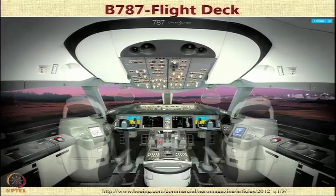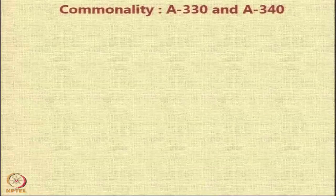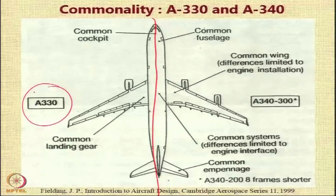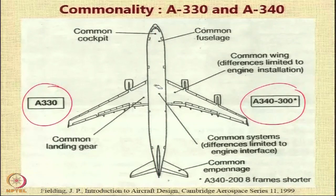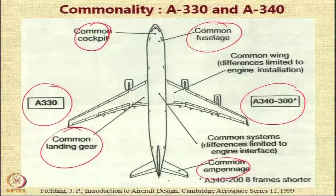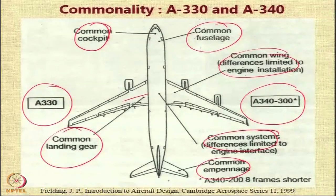Here is the modern cockpit of the Boeing 787, and a similar configuration will be seen in future Boeing aircraft. As an example of commonality: the Airbus A330 and A340 share a common wing platform, cockpit, fuselage, landing gear, empennage, systems, and wing. The only difference is the fuel piping routing to the engines. And from the A340-300 to the A340-200, you simply have eight fuselage frames removed to get a new aircraft that meets a different market.